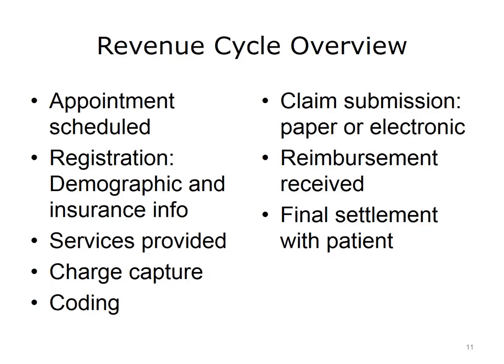At the healthcare facility, demographic information and insurance information are collected when the patient registers. The healthcare organization confirms the terms of the insurance coverage with the third-party payer, either electronically or by telephone. During this process, the provider obtains information about patient deductibles, co-payments, and co-insurance. The healthcare organization then provides services to the patient. Documentation of the services furnished and the diagnosis associated with each service occurs during charge capture. Subsequently, during coding, the diagnosis and services are converted into alphanumeric or numeric codes in a claim, and are submitted to the third-party payer for reimbursement.